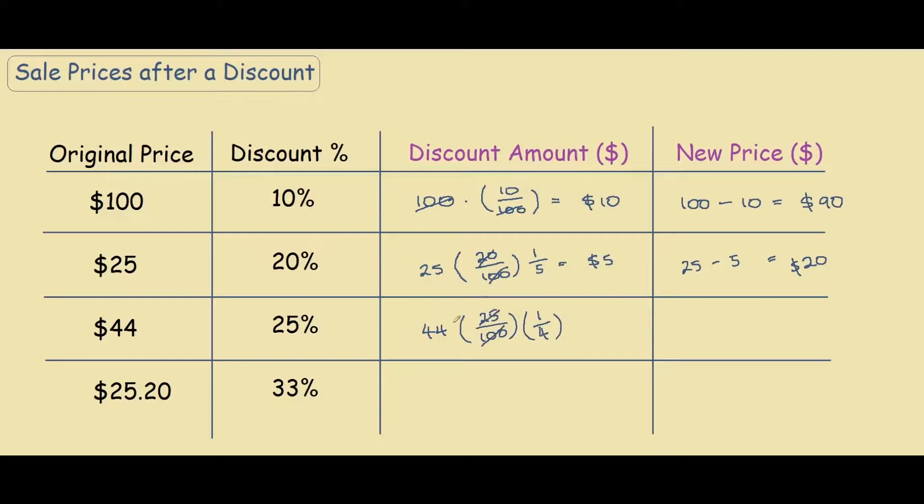So 44 divided by 4, what is that, $11. And hopefully from now you can see that there's a pattern for working at the new price. The new price is simply the original price minus the discounted amount over here. I'll call it D.A. So for this example, we have 44 minus 11, which is the new price is $33.